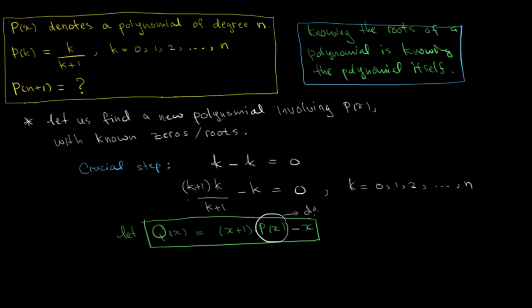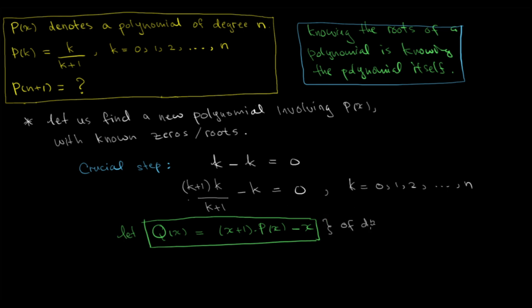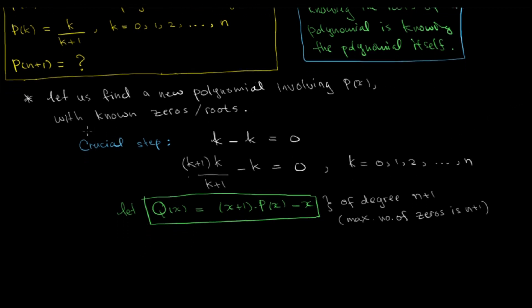As you can see, P(x) is of degree n, and we have P(x) times (x+1) minus x, so the degree of Q(x) must be n+1. It is of degree n+1, and this also means that the maximum number of zeros of this polynomial is n+1. Based on our crucial step, it is clear that Q(0) = Q(1) = Q(2) = ... = Q(n) = 0.